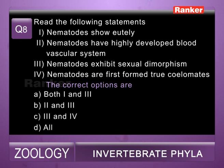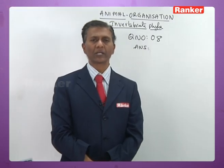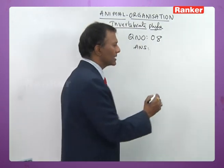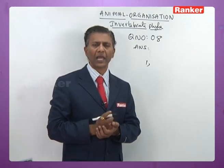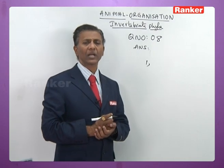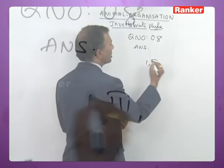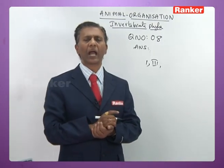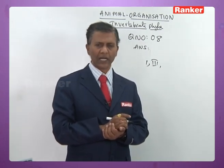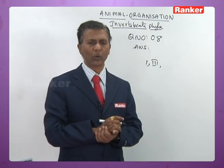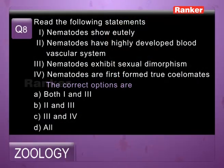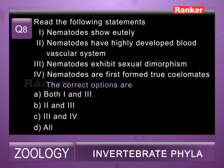Question number eight — read the following statements: 1) nematodes show eutely; 2) nematodes have highly developed blood vascular system; 3) nematodes exhibit sexual dimorphism; 4) nematodes are the first to form true coelomates. Statement 1 is correct. Statement 2 is wrong — blood vascular system is highly reduced or absent in parasites. Statement 3 is correct — males have curved tail with cloaca and penial spicules, females have tapered tail with anus. Statement 4 is wrong — nematodes exhibit pseudocoelom, not true coelom. Correct options are 1 and 3, so the answer is a.